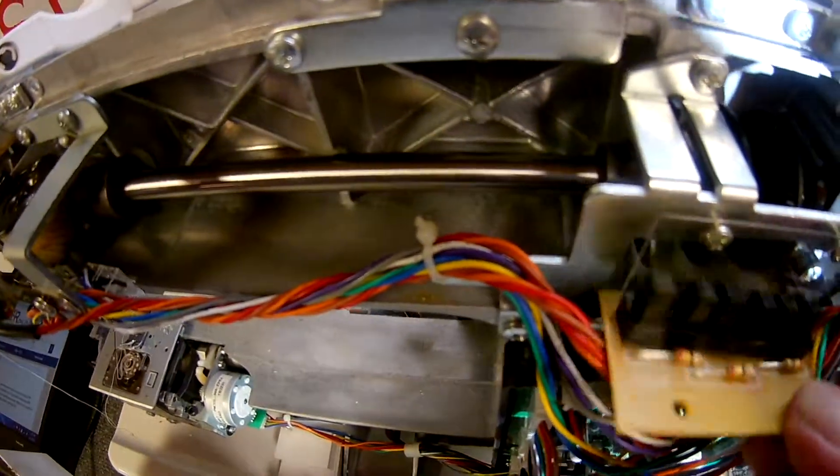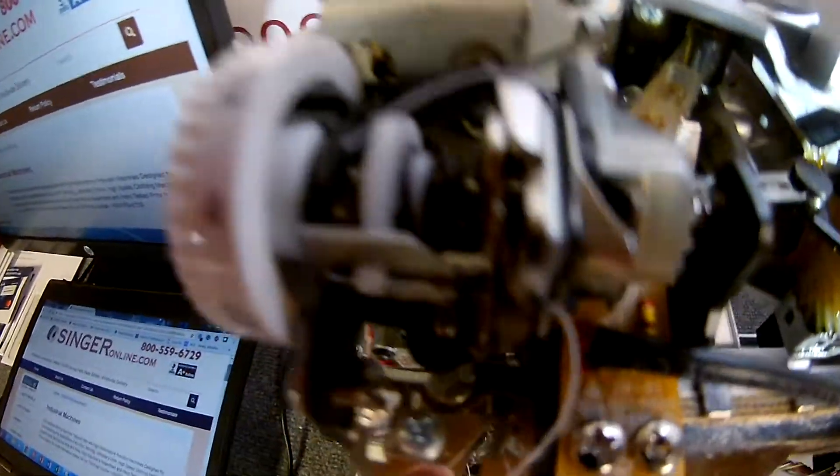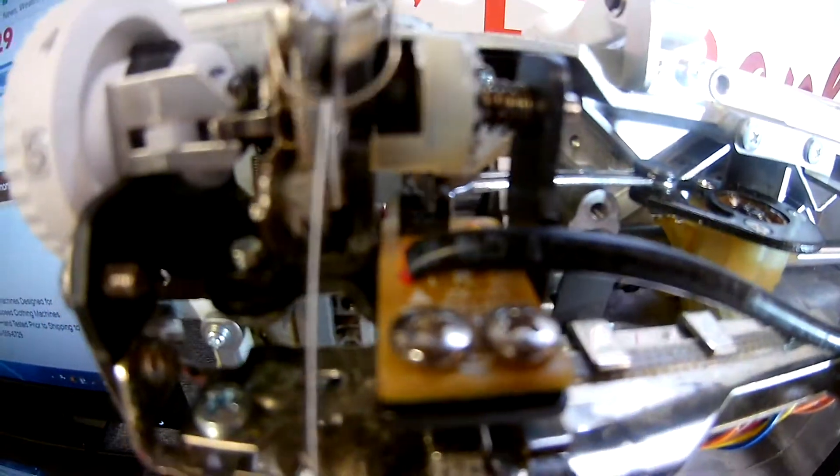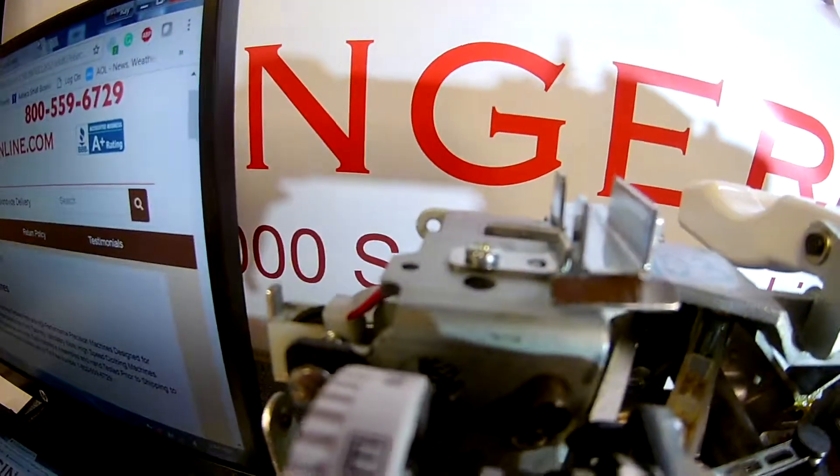There's another switch on this machine that will also do the same thing - it'll sew five or six stitches and stop. That is the thread sensor, this item right here that's connected to that little PC board switch.